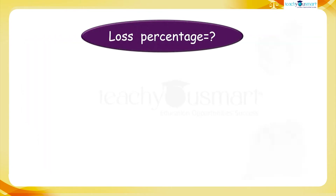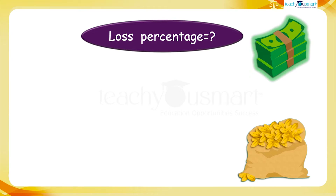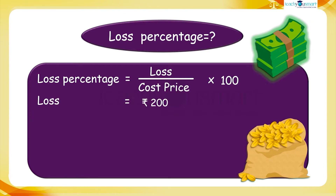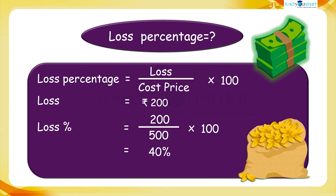Now we have to find his loss percent. For calculating loss percent, we divide the loss by cost price and multiply by 100. Loss equals rupees 200, so loss percent equals 200 divided by 500 multiplied by 100, which equals 40 percent. Therefore, the farmer faced a 40 percent loss.